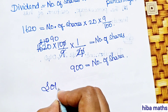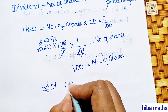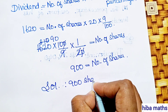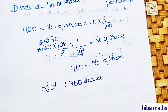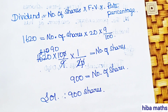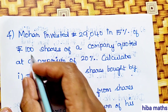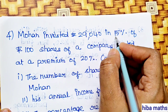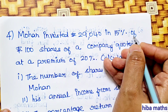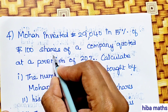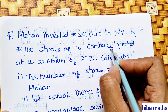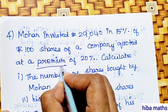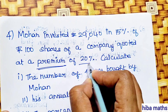Therefore, the number of shares is 900. We substituted the formula and solved the question. Fifth question: Mohan invested rupees 29,040 in 15% of rupees 100 shares of a company quoted at a premium of 20%.